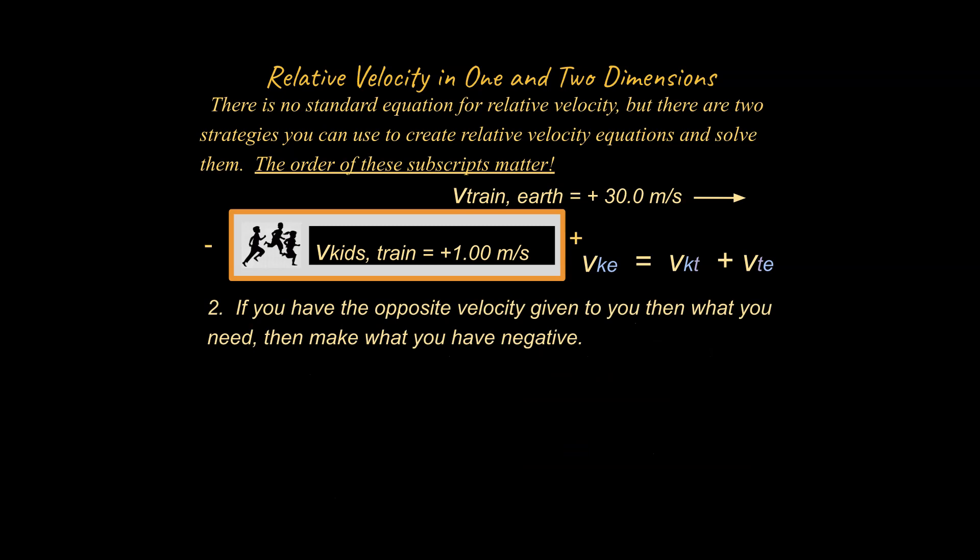All right, and there's one more strategy. Oftentimes problems are given to you where it's not this easy, where they give you the opposite velocity of what you need. And you have to make that negative. So let me throw you a curveball. And this is actually really useful to think about. What would the problem have given us if they give us the movement of the Earth with respect to the train? I want you to think about what that means. The movement of the Earth with respect to the train. So the train is the frame of reference. What would the Earth appear to be doing if you were the conductor of the train? How would the Earth appear to be moving from your point of view?